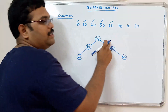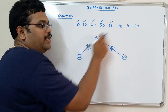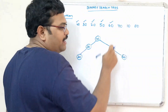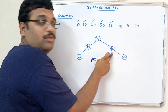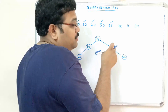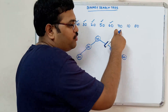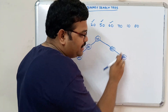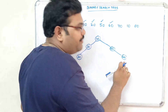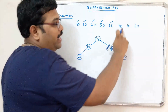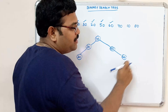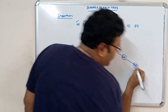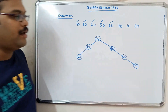Next is 70. The tree is not empty. 70 is greater than 40, so it goes to the right subtree. In the right subtree, 70 is greater than 50. The position of 70 should be on the right-hand side of 50. There is already an element 60 there. Comparing 70 with 60 — 70 is greater than 60 — so 70 is placed to the right side of 60.